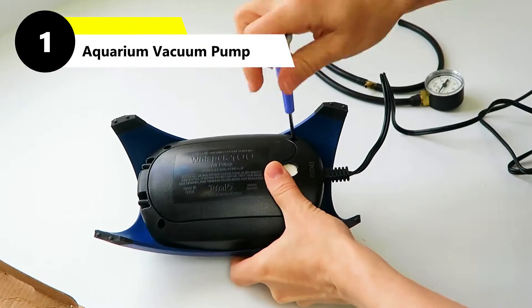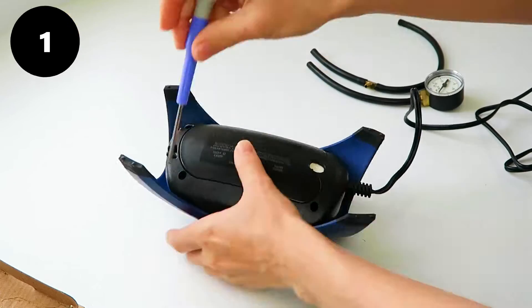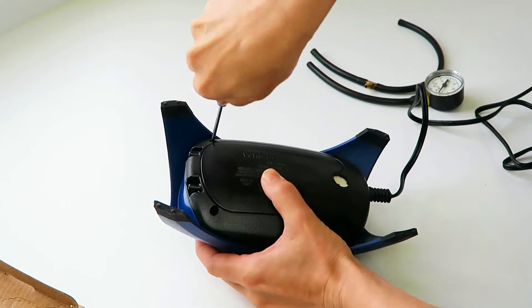Tip 1: Convert an aquarium air pump to make an inexpensive vacuum bagging pump. Remove the screws to open the cover.